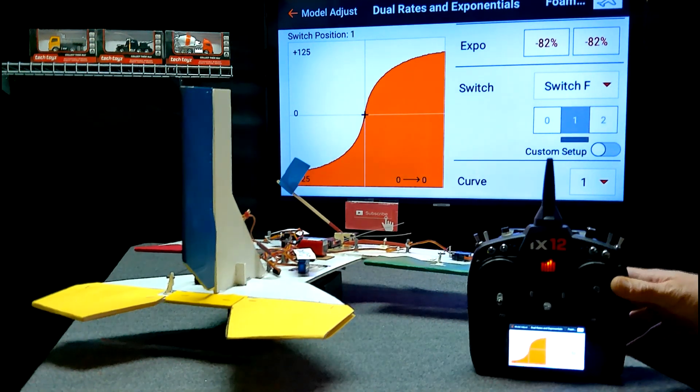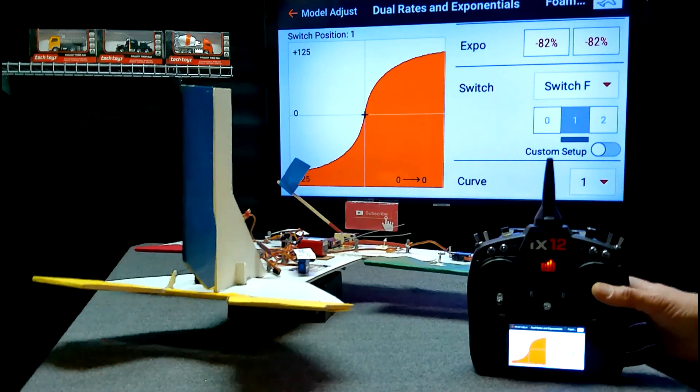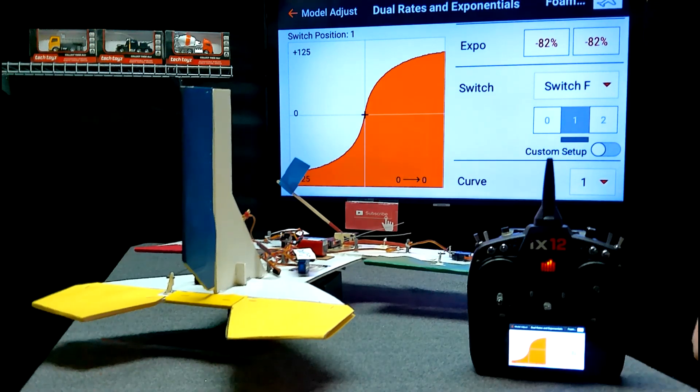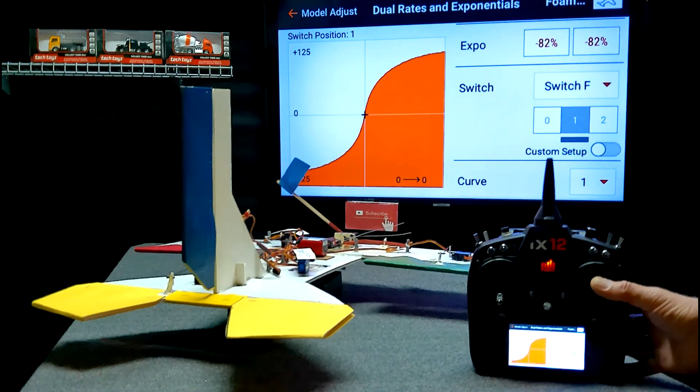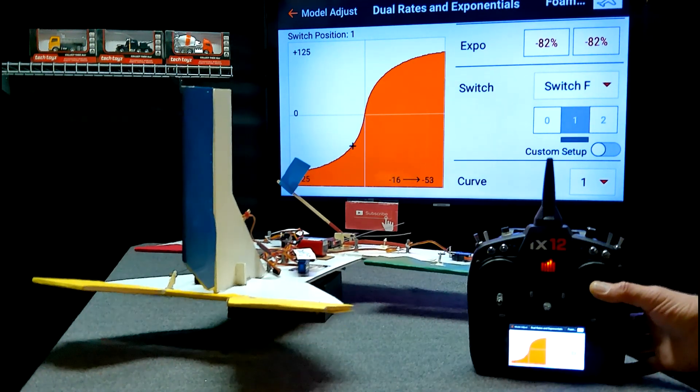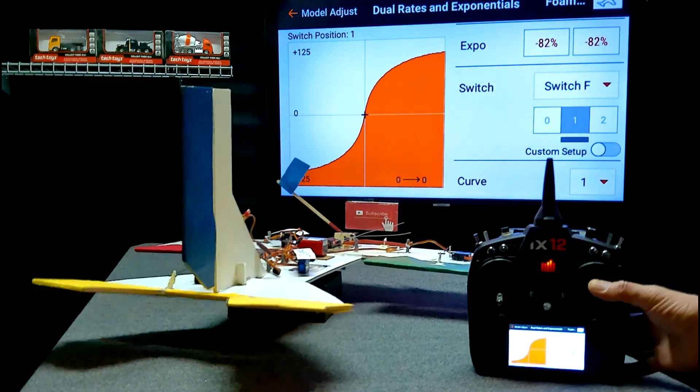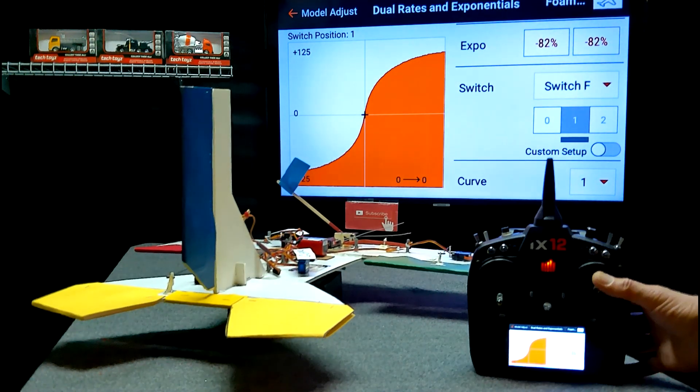Let's go to the setting with negative Expo. I barely move the stick and the elevator is all the way up already. Look how fast that is. Watch my thumb, watch the elevator. Barely move my thumb and the elevator is already up. It's already where it needs to be.